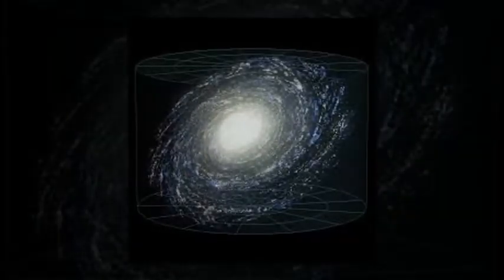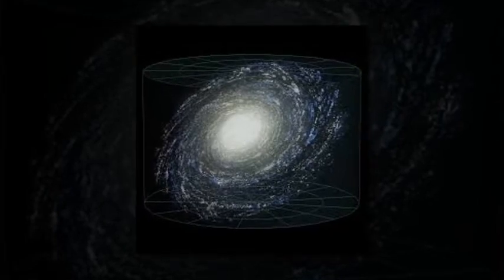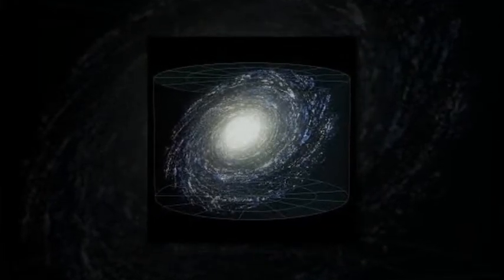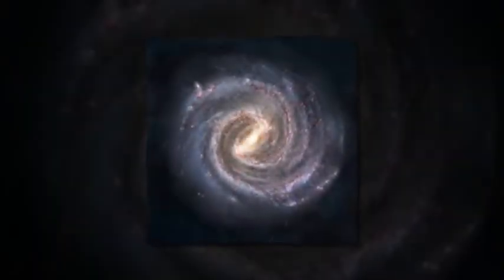The researchers mapped the galaxy by observing red giants, bright stars in the final stages of their lives that can be observed out to large distances from our sun, into the very inner and outer reaches of the Milky Way.